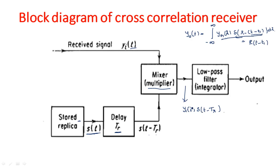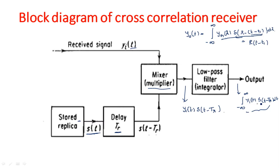When this signal passes through a low pass filter — which acts as an integrator — the output is: integral from minus infinity to infinity of y_in(t) times s(t minus tr) with respect to t. Comparing this with the theoretical expression, y_in(λ) matches y_in(t) and s(λ minus some value) matches s(t minus tr). So we get the same expression, confirming we can design correlation detection using this concept — r(t minus t1).